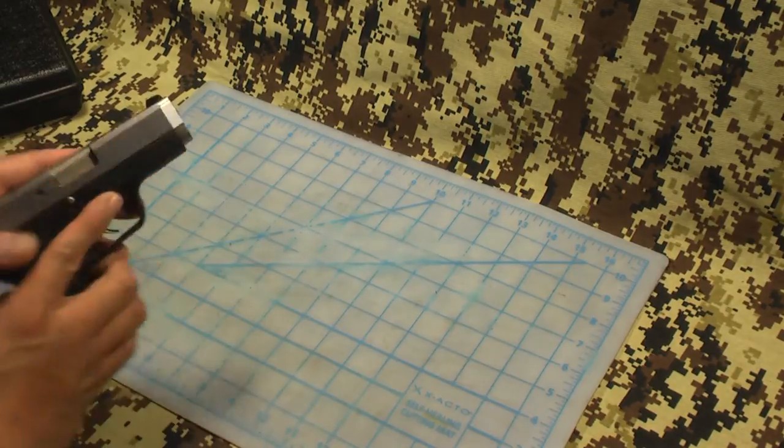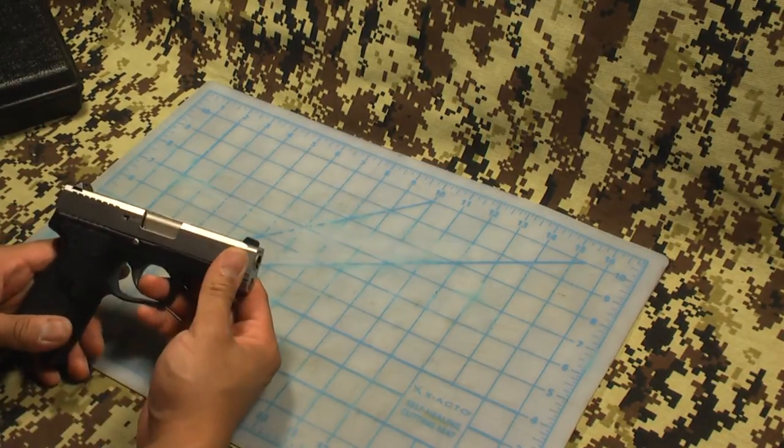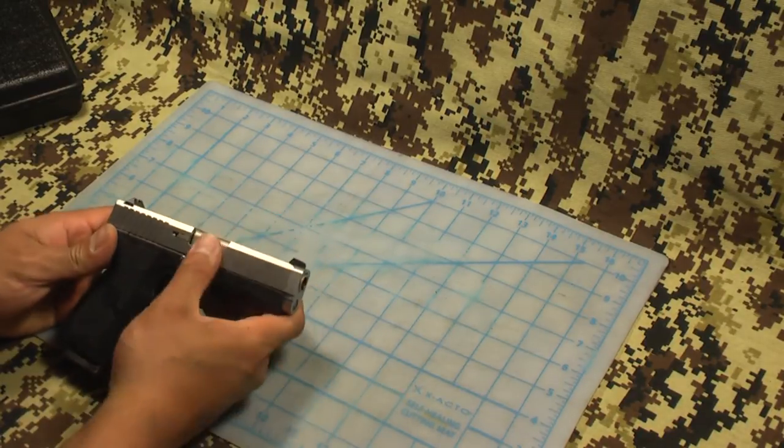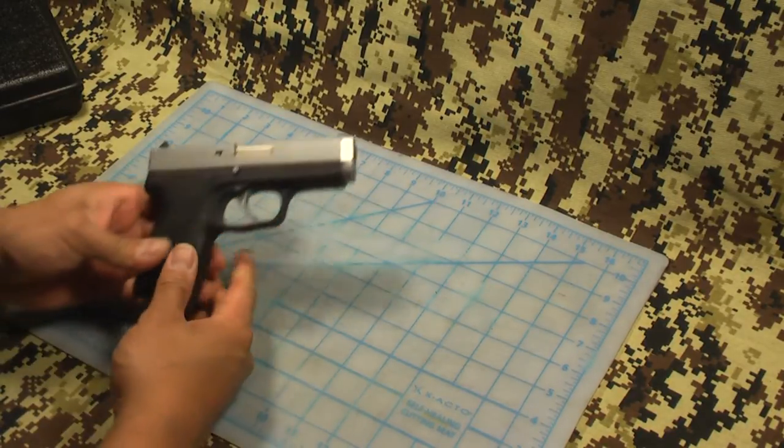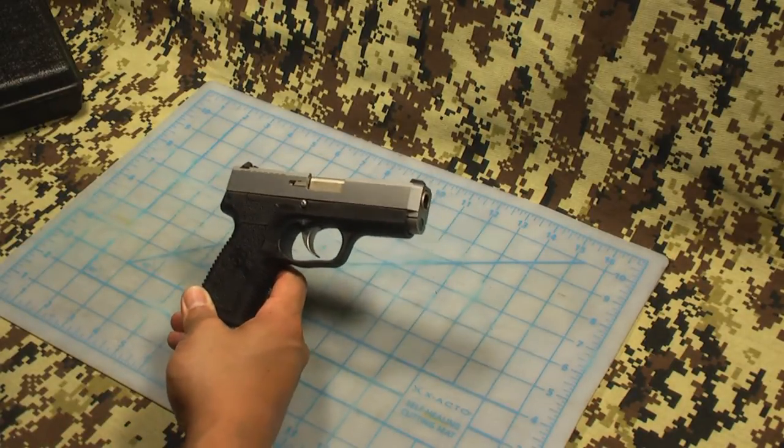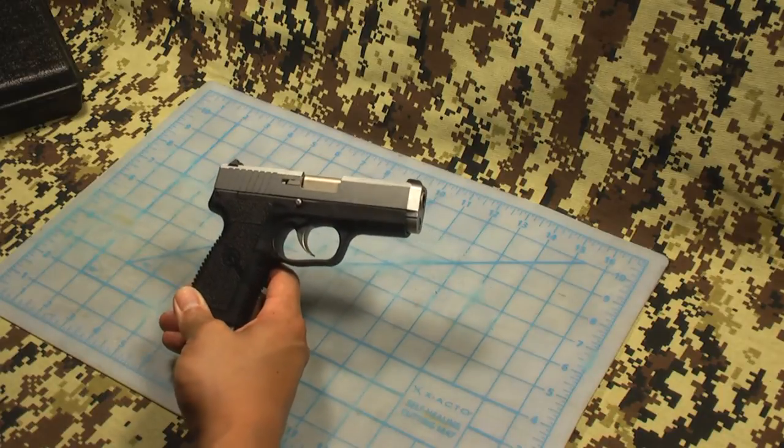And the barrel length is 3.6 inches, which is pretty incredible for a firearm this small. The barrel length is actually longer than that of a Glock 26, just by very little, just by maybe 0.1 or one tenth of an inch.